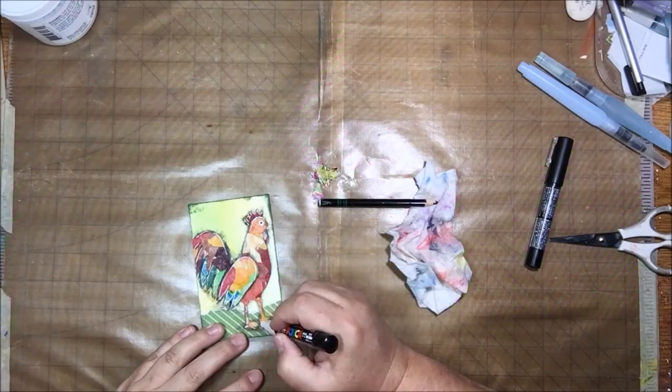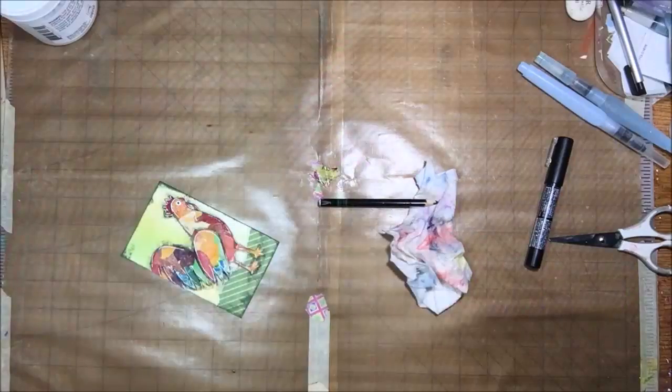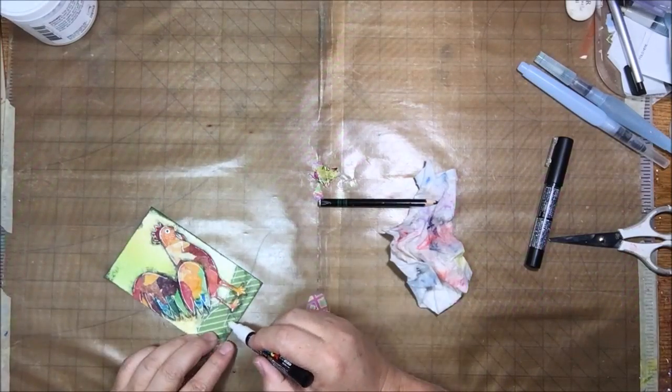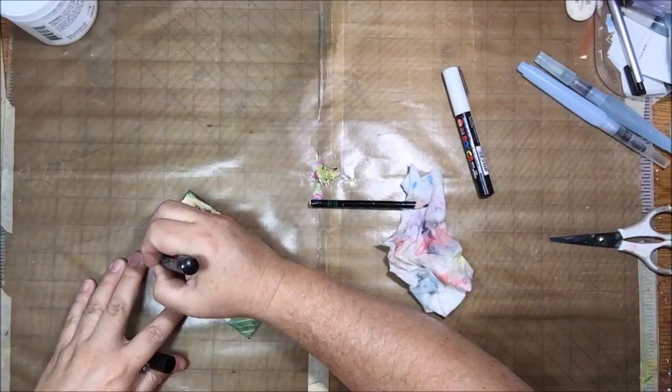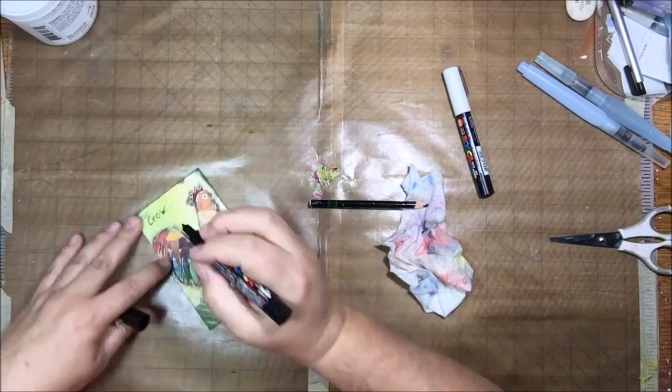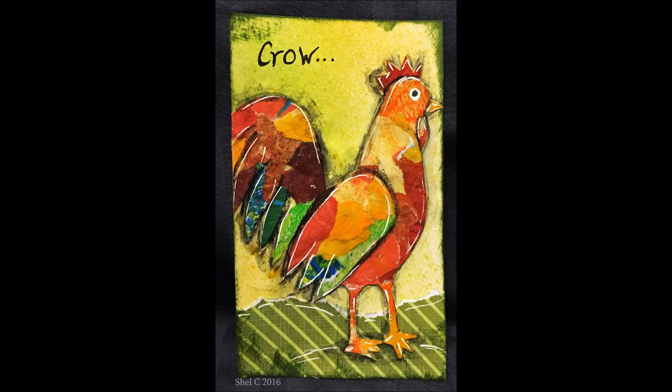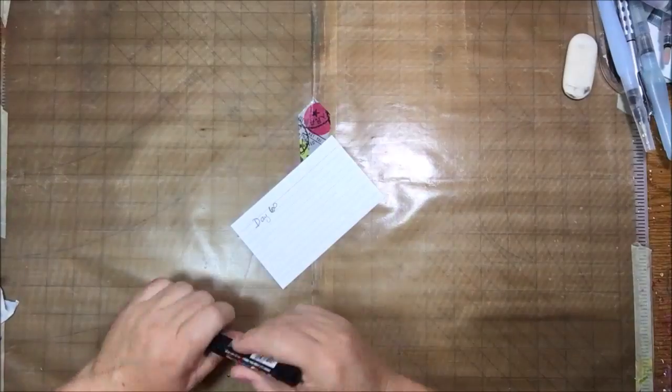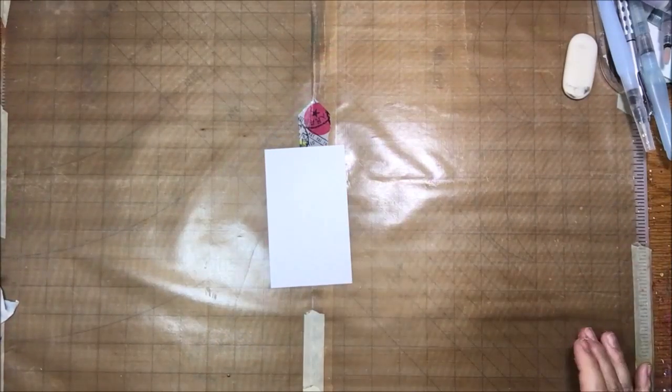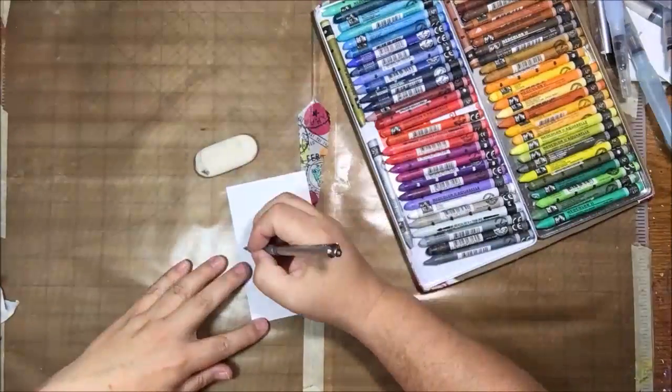I'm using the Posca pen to make his eyeball and of course then the white Posca for my scratchy lines that I like to do for highlights at the end. This guy is almost done. I end up writing the word crow, not because he's a crow, he's a chicken, but they do crow. I know you people think I am nuts. It's okay.